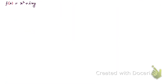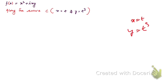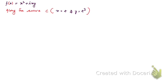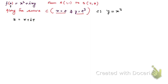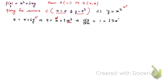The given function is f(z) = x² + ixy. Along curve C: x = t, y = t³. Since x = t, we can replace t with x, so y = x³. Differentiating z = x + iy with y = x³: dz/dx = 1 + i·3x², so dz = (1 + 3ix²) dx.